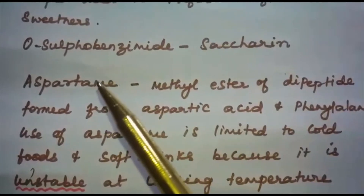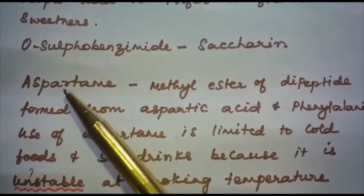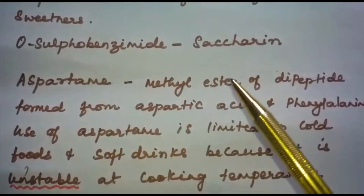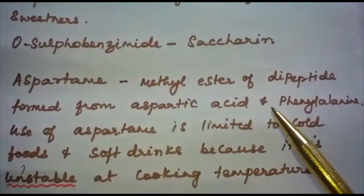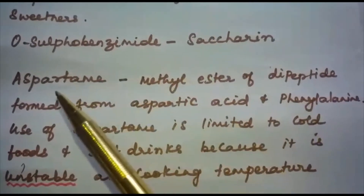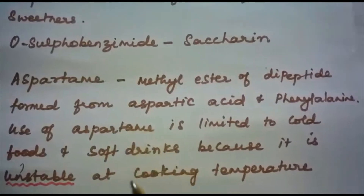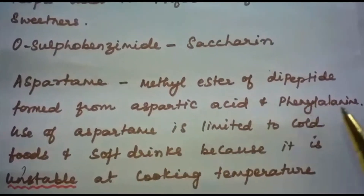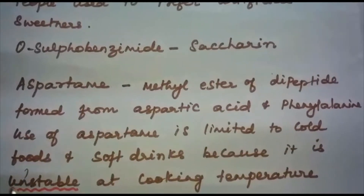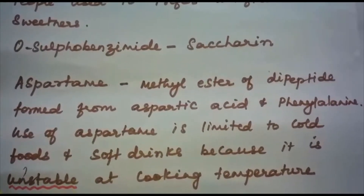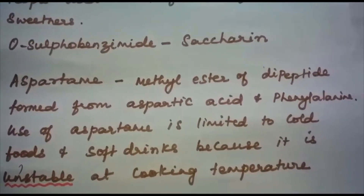Let us discuss about aspartame and alitame. Aspartame is an artificial sweetener — it is a methyl ester of a dipeptide formed from aspartic acid and phenylalanine. The main disadvantage of aspartame is that its use is limited to cold foods and soft drinks because it is unstable at cooking temperature.